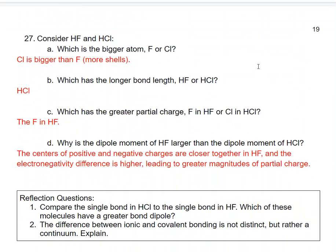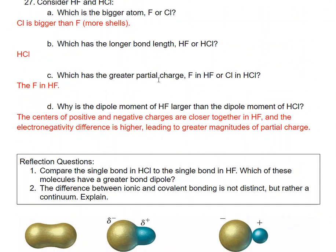Comparing HF and HCl: chlorine is larger because it has more shells, so HCl has a longer bond length. The greater partial positive charge on hydrogen is found in HF rather than HCl, because F has a higher electronegativity than Cl and pulls electrons more strongly away from hydrogen. The dipole moment of HF is larger than that of HCl because the bigger electronegativity difference leads to greater magnitudes of partial charge.